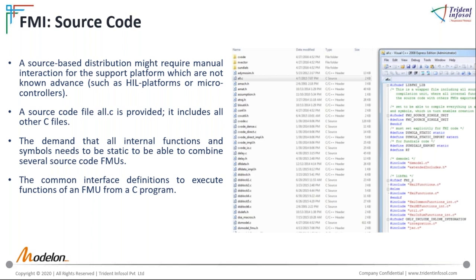For unknown platforms, the complete source code in C language is provided. One C source file includes all other needed C files using a hash include directive — it acts as a wrapper file and is named 'all.c'. This all.c file is needed to compile all FMU source code as one unit, which is required because all internal functions and symbols need to be static, allowing combination of several source code FMUs. From the system's C program it is executed through the execute function, creating a common interface for interfacing with FMU model blocks.